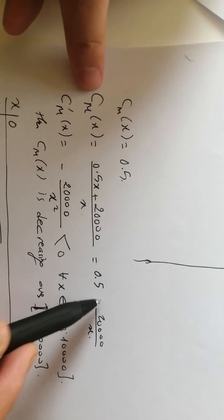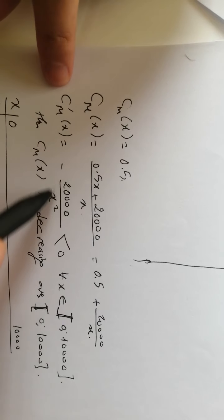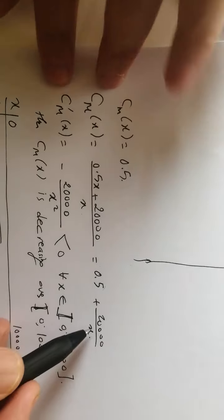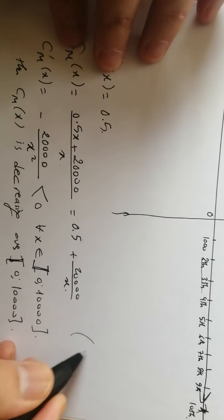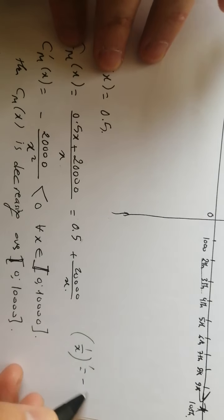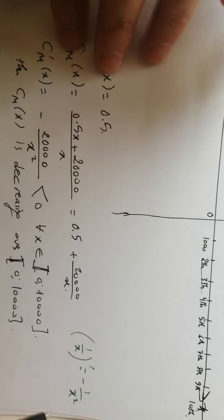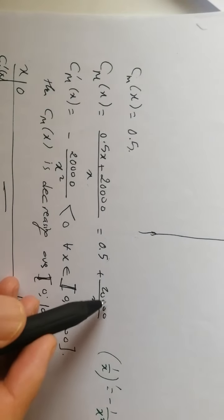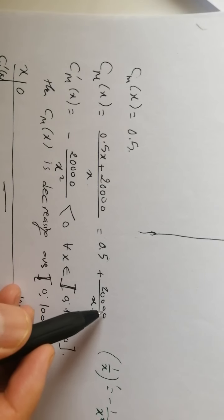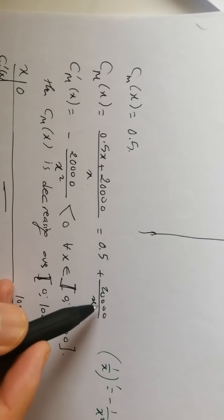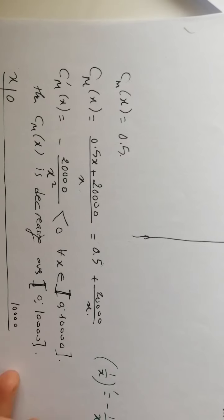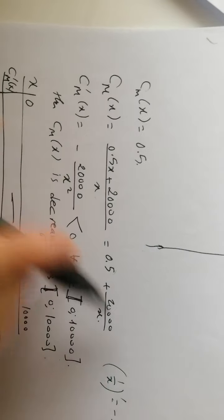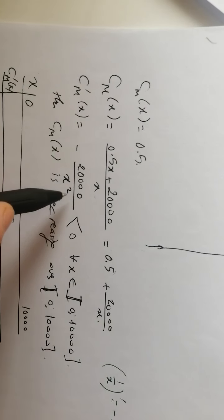If we rewrite the average cost, it becomes 0.5 plus 20,000/x. Taking the derivative: the derivative of 1/x is minus 1/x squared. The derivative becomes minus 20,000/x squared, which is less than 0. The average cost is decreasing over this interval.